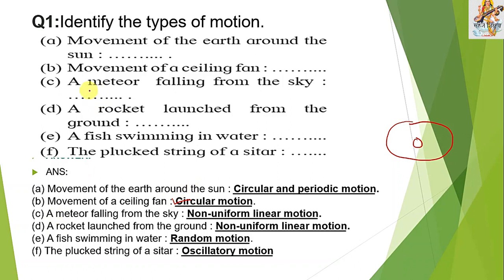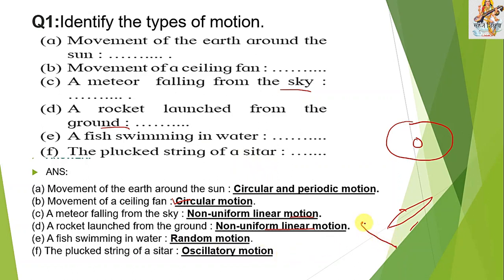A meteor falling from the sky — it is a non-uniform linear motion. A rocket launched from the ground is also a non-uniform linear motion. A fish swimming in water is a random motion; fish swim here and there in random fashion. The plucked string of a sitar is an oscillatory motion because it vibrates between two nodes.